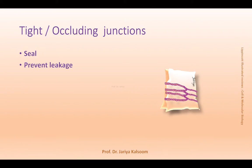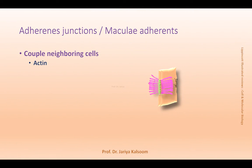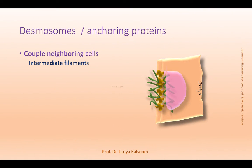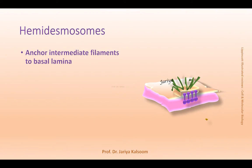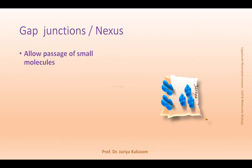Tight junctions form physical barriers between cells. Adherence junctions join neighboring cells together by interacting with actin filaments of the cytoskeleton. Desmosomes join neighboring cells together through interactions with intermediate filaments. Hemidesmosomes link the intermediate filaments of the cytoskeleton with the basal lamina. Gap or communicating junctions allow transfer of signals between cells.